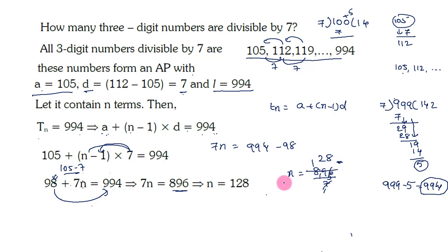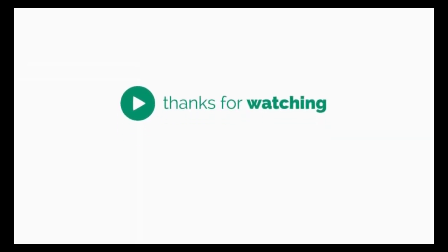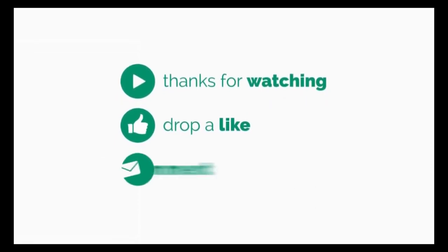That means N equals 128. There are 128 three-digit numbers which are divisible by 7. I hope you understand this problem. Thank you friends for watching this video.